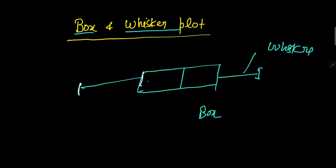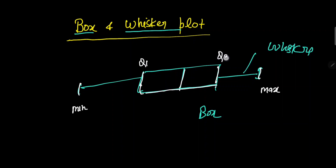We have five points in this box and whisker plot and all these five points have separate names. The leftmost point is the minimum and the rightmost point is the maximum. Inside the box we have three points: the first point is Q1 (quartile one), the third point is Q3 (quartile three), and the middle line is the median.